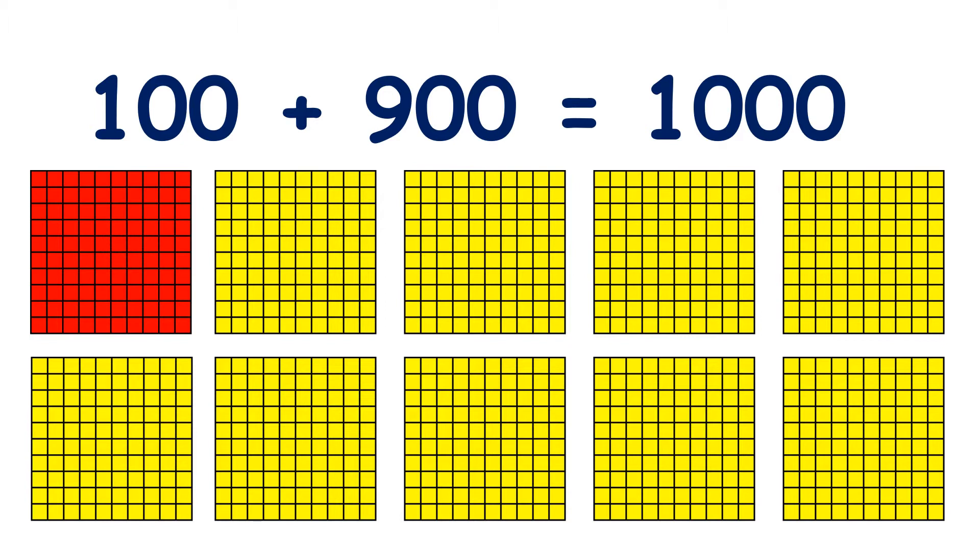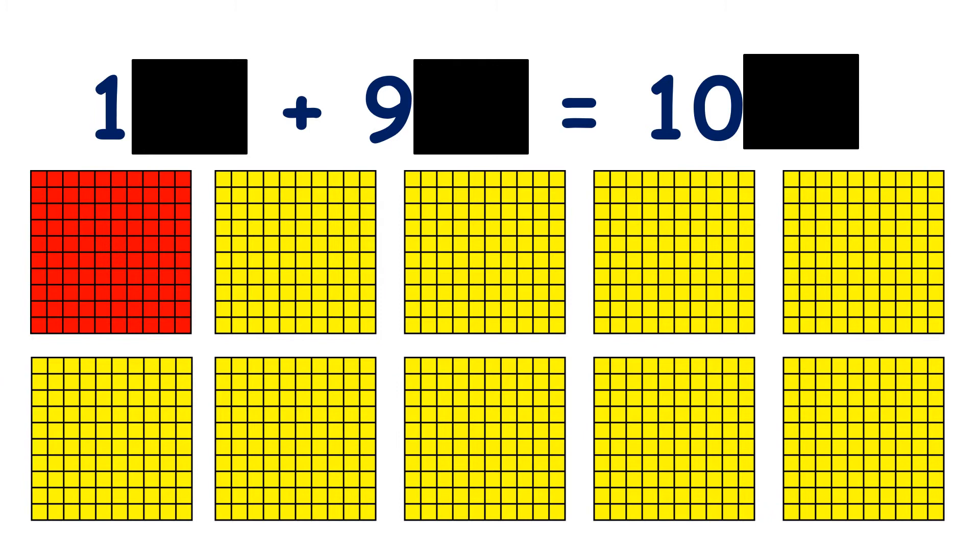Number bonds to a thousand with hundreds are very similar to number bonds to ten. If we know that one plus nine is ten, we know that one hundred plus nine hundred is one thousand.